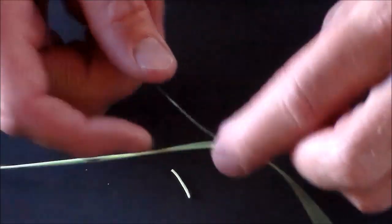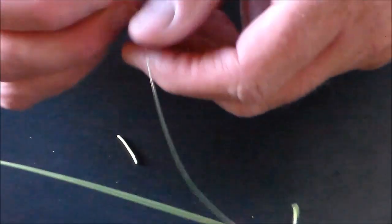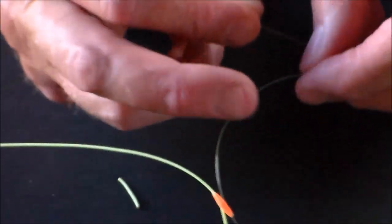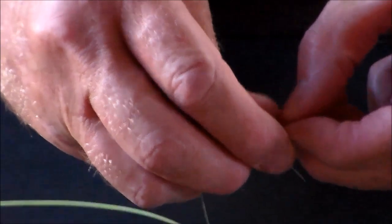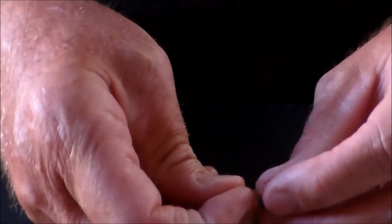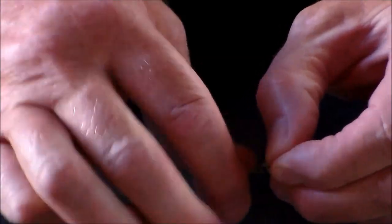Then in the leader side, you're going to tie a clinch knot, which is a knot we use a lot for attaching hooks. It's just a knot where you wrap the line around a couple of times and put it back through the loop.